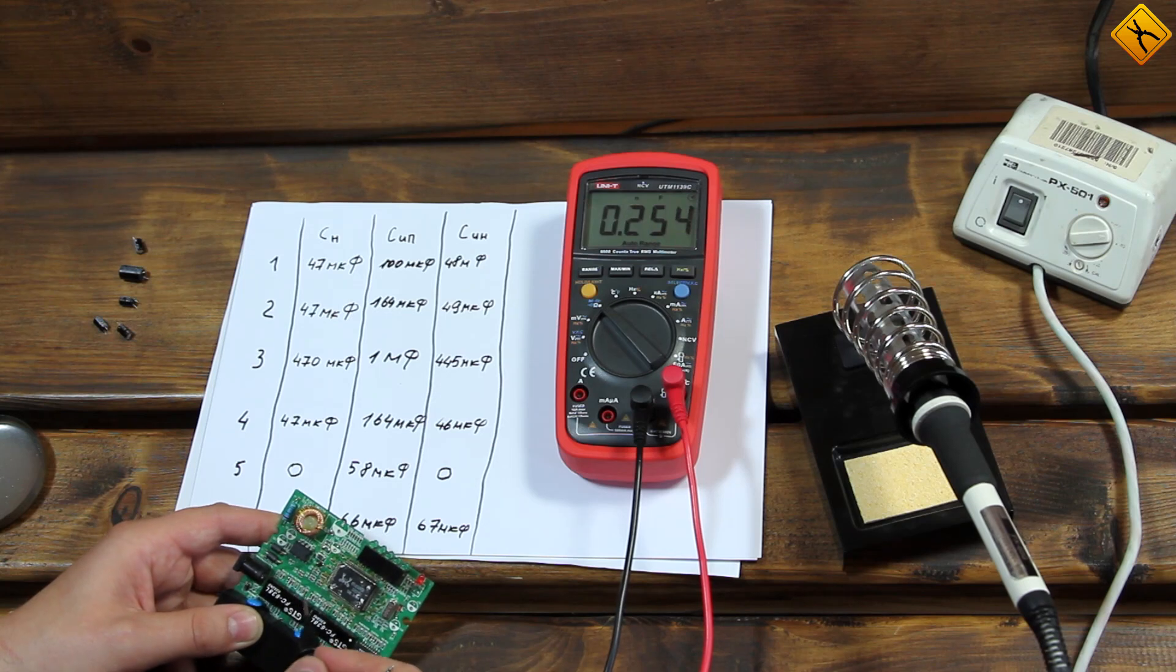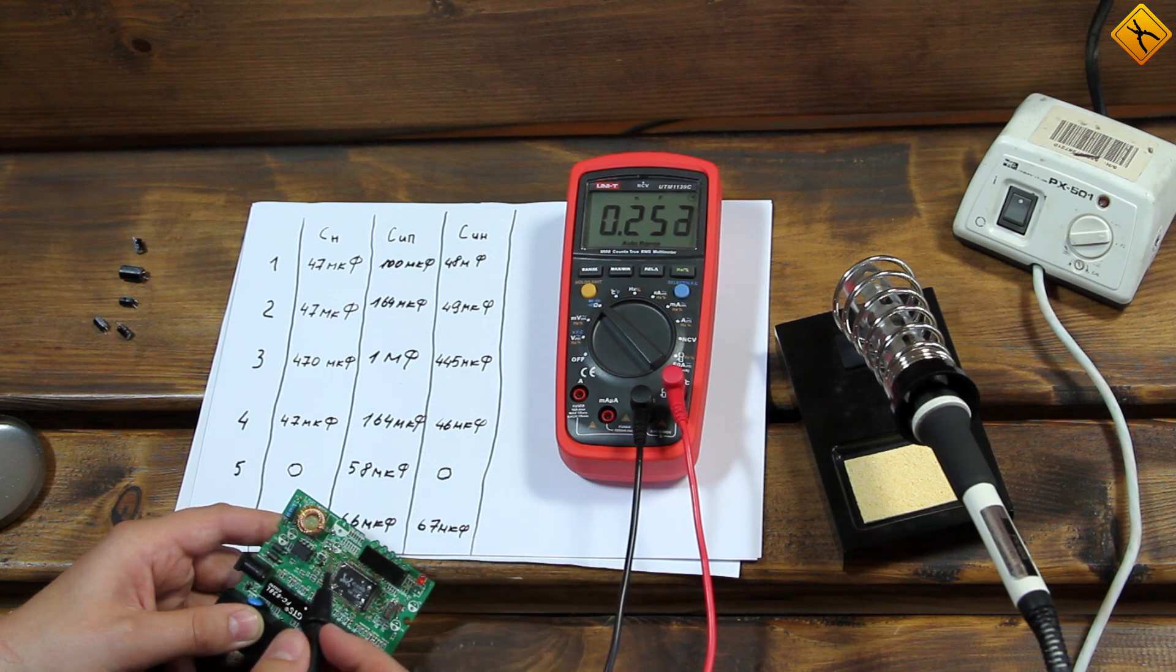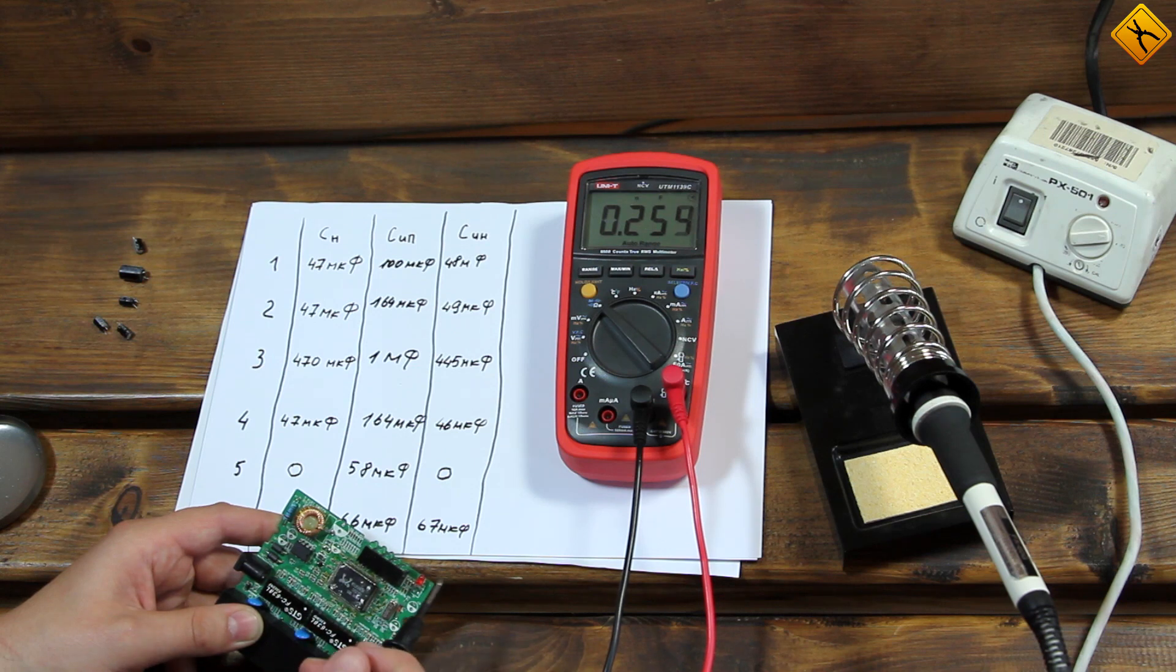Instead, buy regular, quality multimeters. You don't necessarily need this one even. Just make sure you buy regular measuring equipment from good manufacturers and measure things properly.